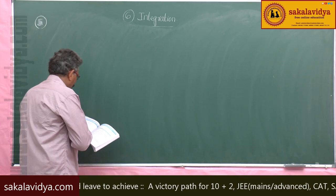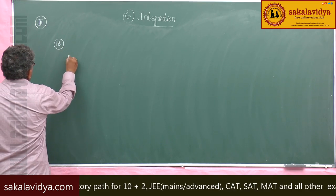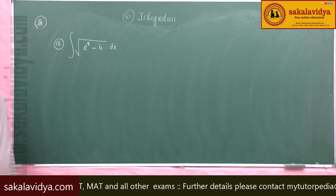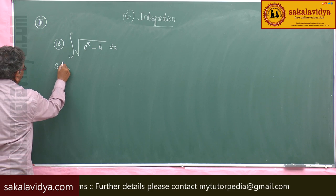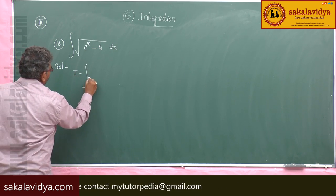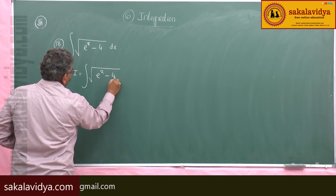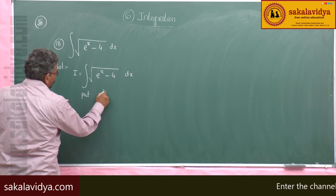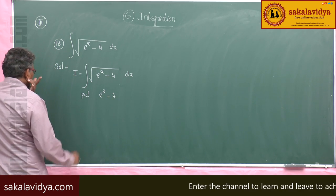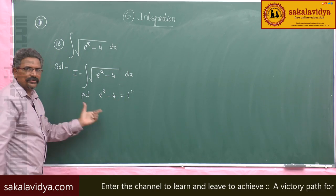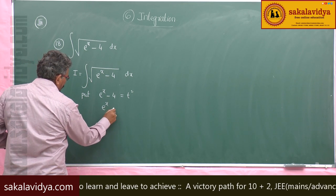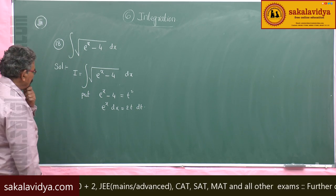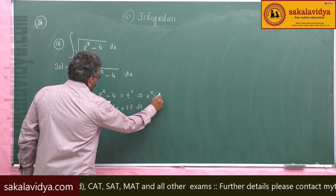18th problem. Evaluate integral of root of (e power x minus 4) dx. I equals integral of root of (e power x minus 4) dx. Put e power x minus 4 equals t squared. Differentiating both sides with respect to t, e power x dx equals 2t dt. So e power x equals t squared plus 4.